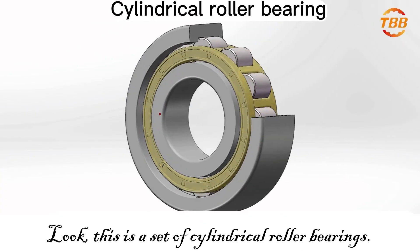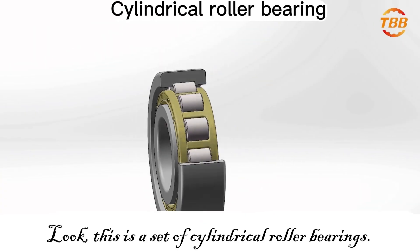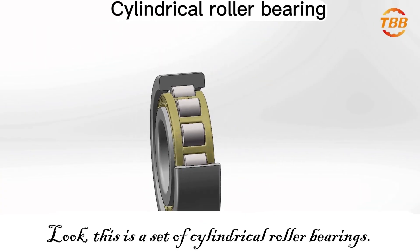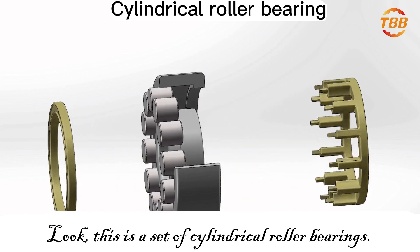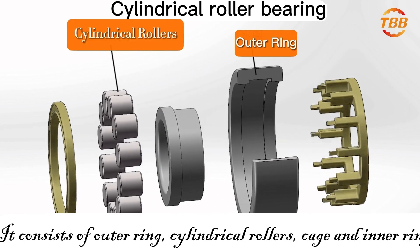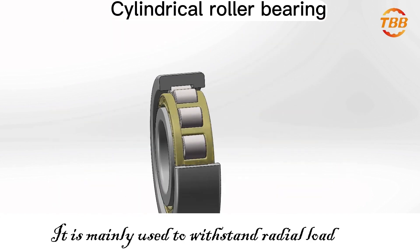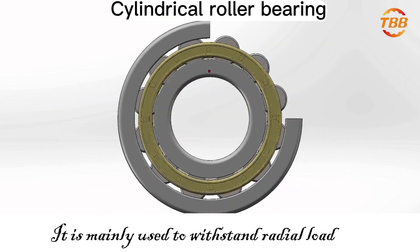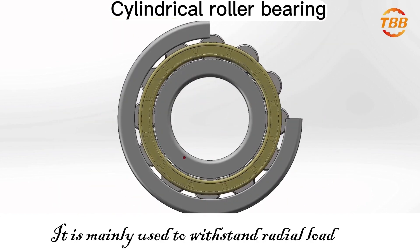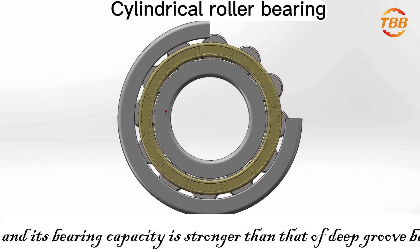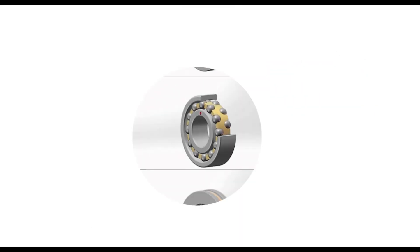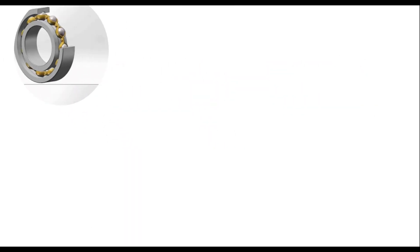This is a set of cylindrical roller bearings. It consists of outer ring, cage, inner ring, and cylindrical rollers. It is mainly used to withstand radial load and axial load, and its bearing capacity is stronger than that of deep groove ball bearings.